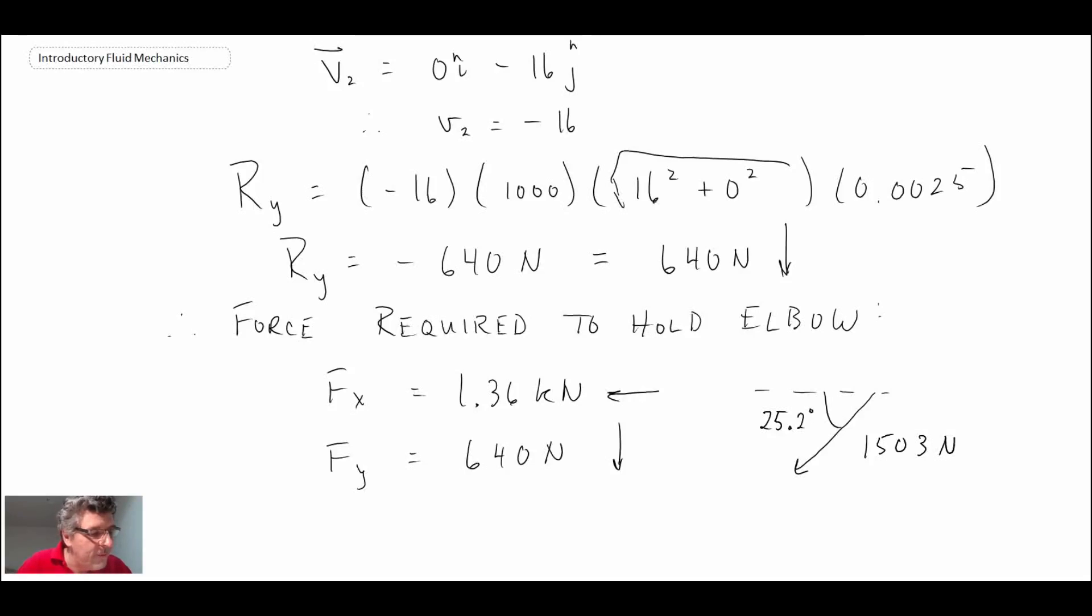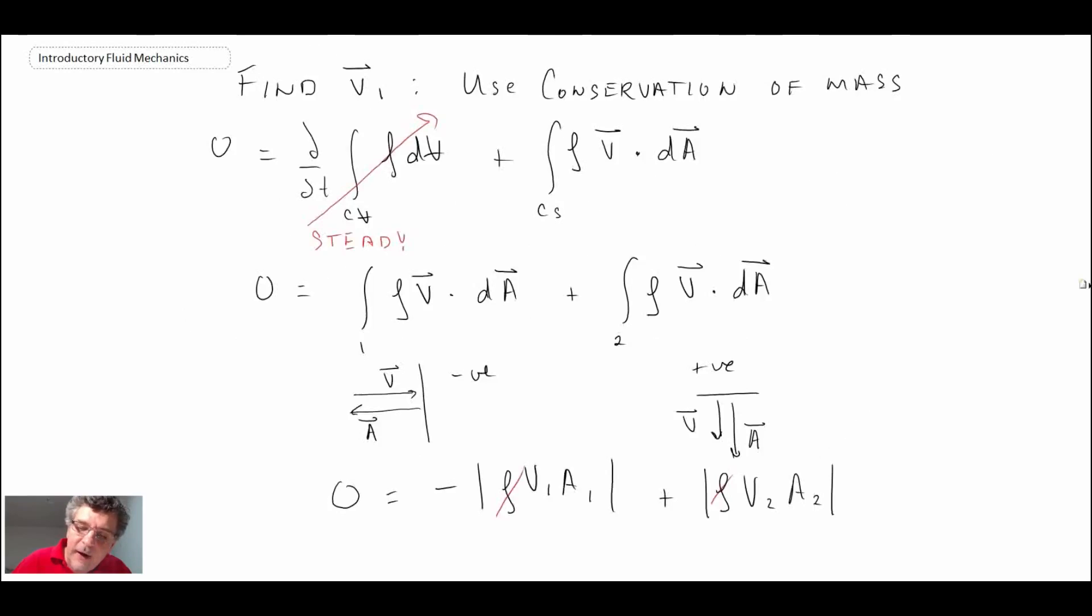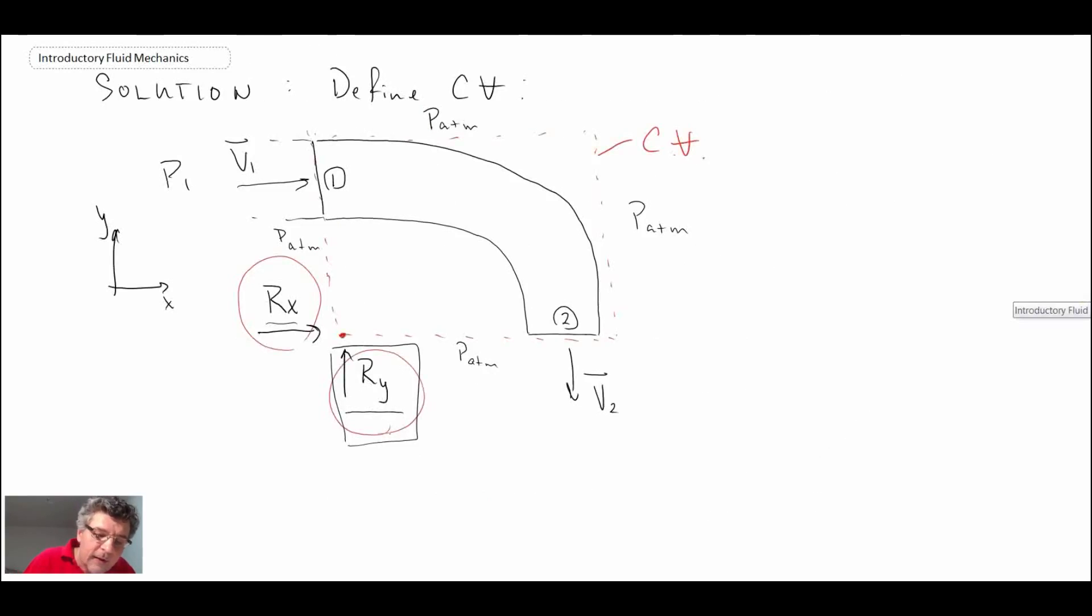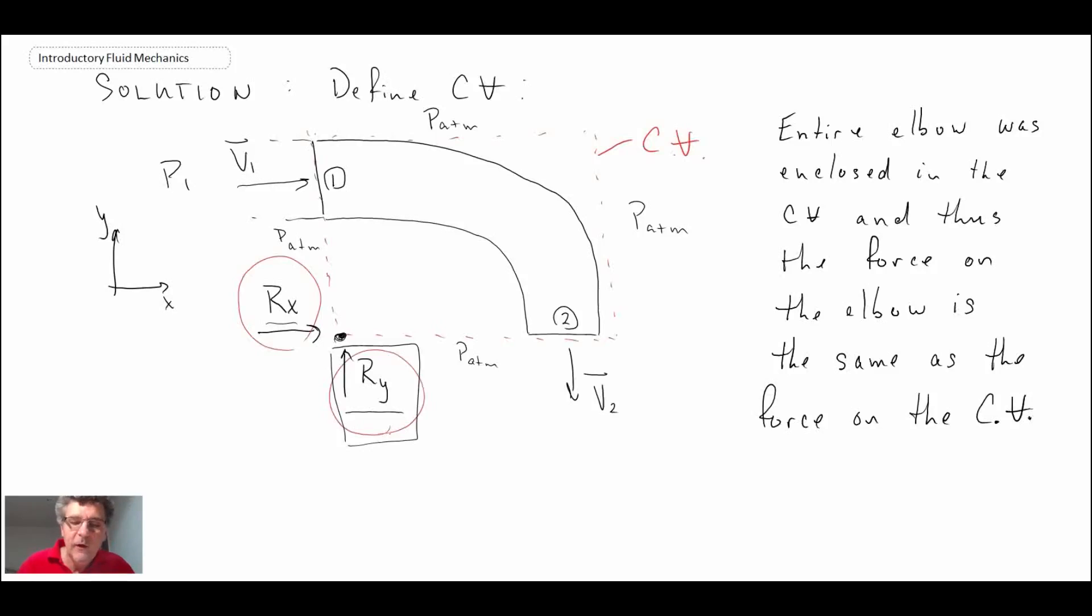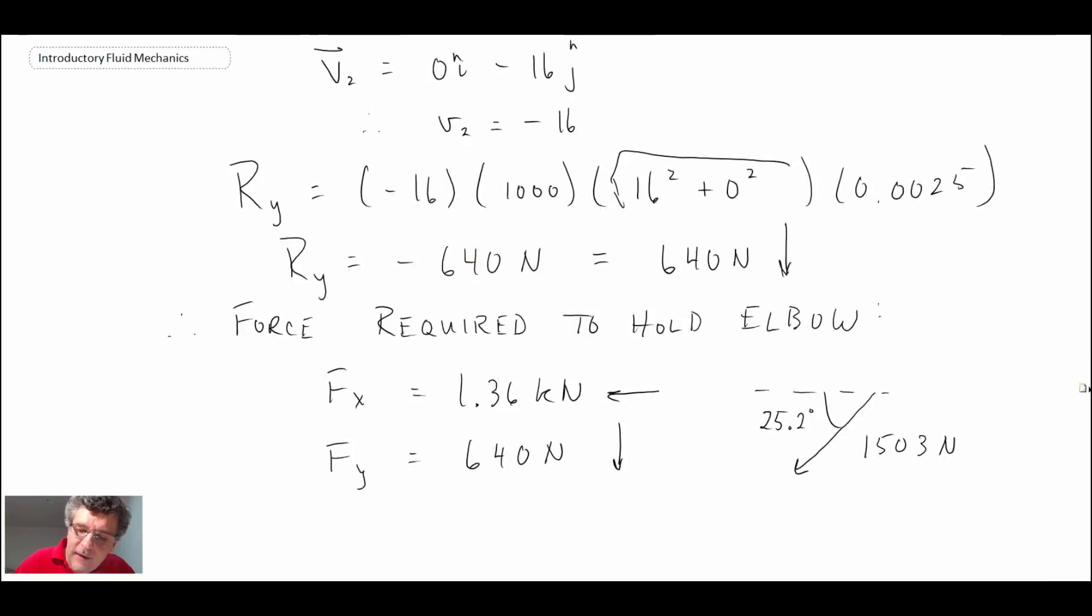One final note that I will make is if you look back at our free body diagram, we were computing the force on the control volume. So what we can say is that although we were calculating force on the control volume, that really is the same force that would be required to hold the elbow stationary, because the entire elbow is enclosed by the control volume. So that is an application of control volume analysis using the conservation of linear momentum. We started with continuity and then went to linear momentum. That gives you an idea as to how you can apply this.